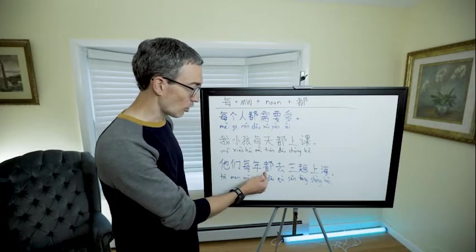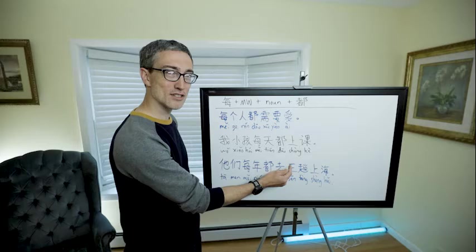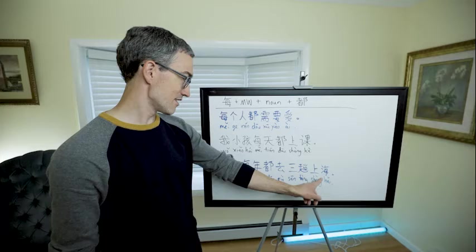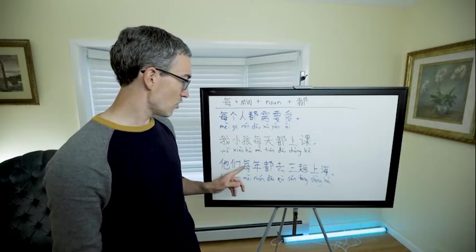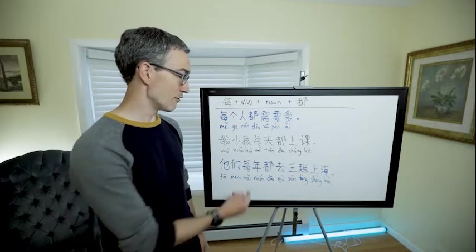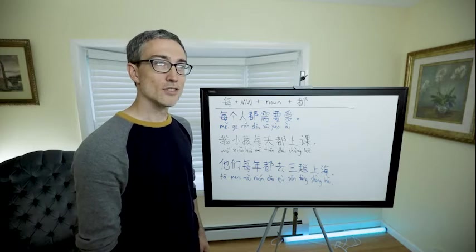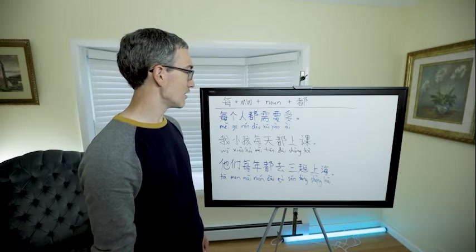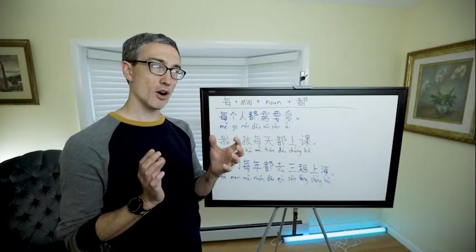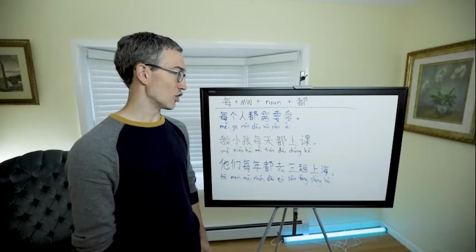他们每年都去三趟上海 (tāmen měinián dōu qù sān tàng Shànghǎi) - 三趟 means three trips or three times, so they go, 上海 is of course Shanghai, it's the city, so they go to Shanghai for three trips every year, or they go every year, they go to Shanghai three times, something like that. So there we have 每, it's a very useful phrase. There's a measure word attached to it and it's often, almost always, paired with 都 to emphasize that largeness of quantity.